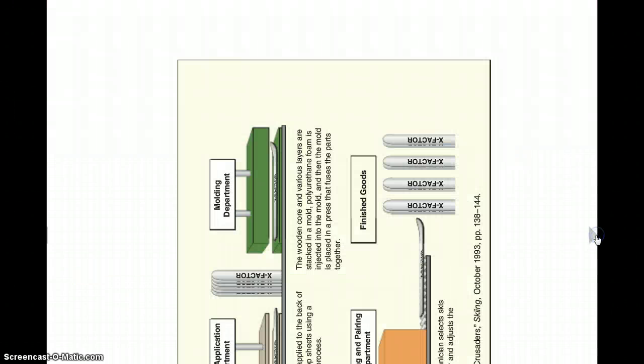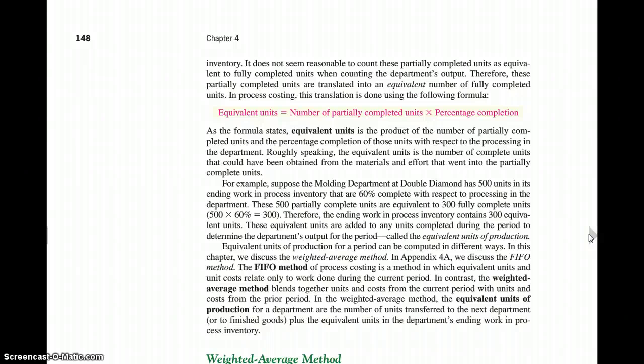Next, we want to talk about equivalent units of production. Equivalent units are equal to the number of partially completed units times the percentage of completion. So what happens is sometimes materials and labor and everything is being assigned to work in process either process A or process B. It doesn't matter. And they don't become completed. They're still being worked on at the end of the period. But they're not really zero, but they're not really a complete unit. So what we need to do is we kind of figure out equivalent units. Equivalent units is the product of the number of partially completed units and the percentage of completion of those units. Roughly speaking, it's the number of complete units that could have been obtained, but they're not quite done.